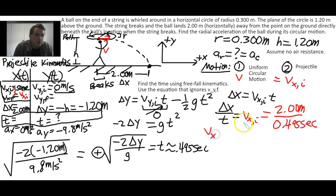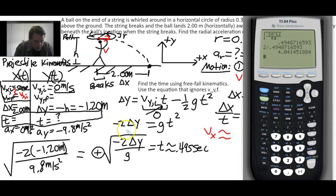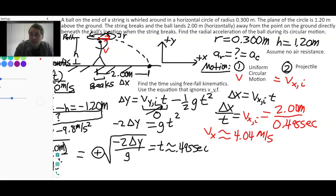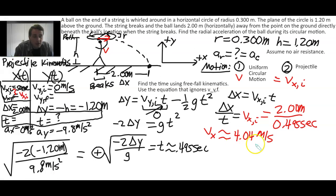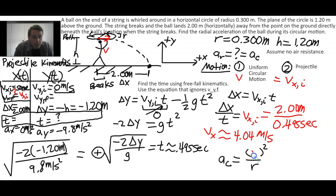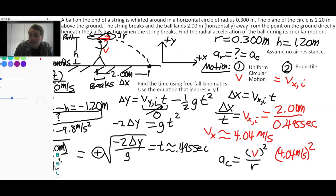So v_x, which is the same as v_x_initial because it doesn't change, is approximately 4.04 meters per second. Finally, we calculate the centripetal acceleration, since it depends upon that v. The centripetal acceleration is a_c = v² / r.